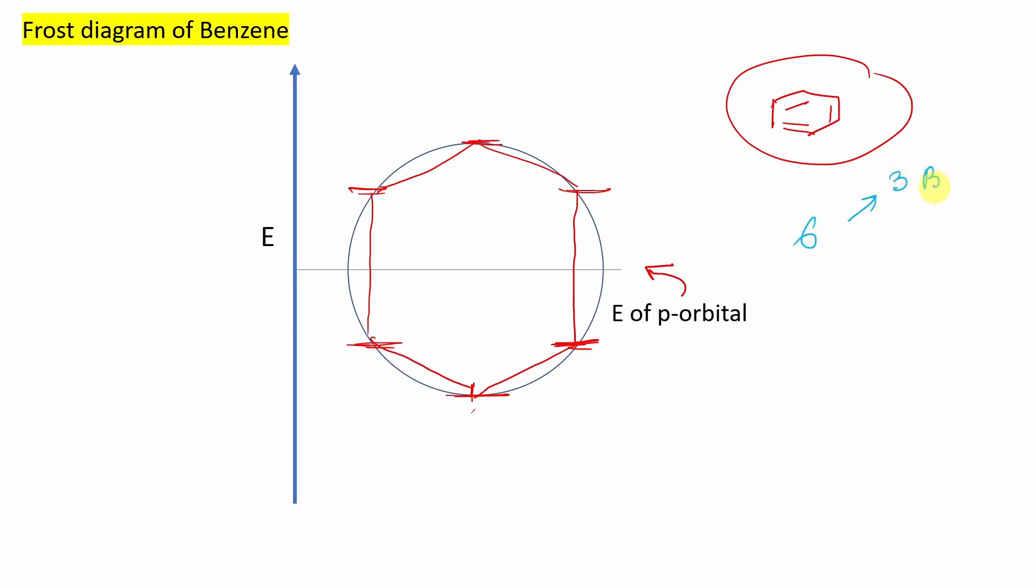And among these 6 orbitals, 3 are BMO, bonding molecular orbital and 3 are ABMO, anti-bonding molecular orbital. Here these 3 are BMO because lower in energy and these are ABMO.